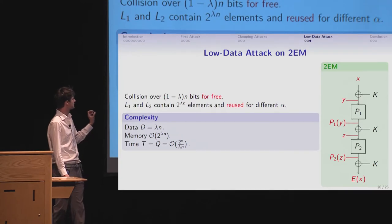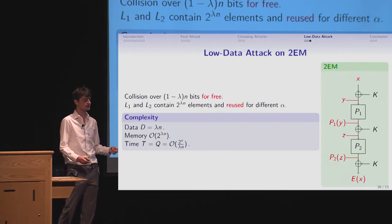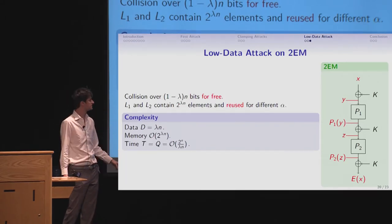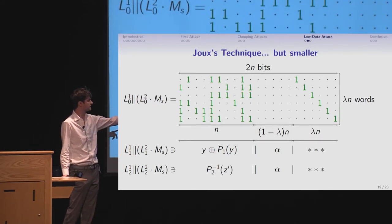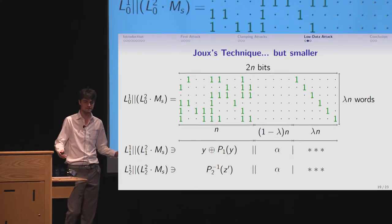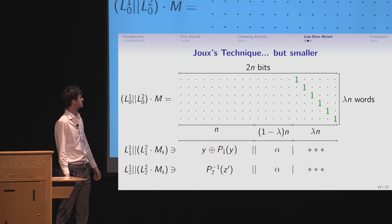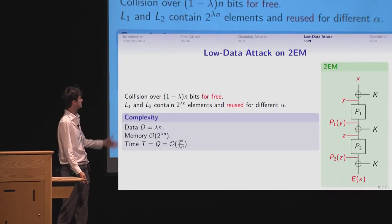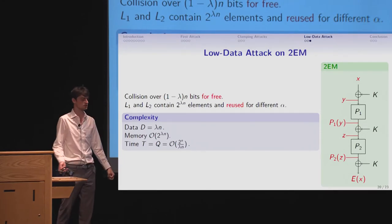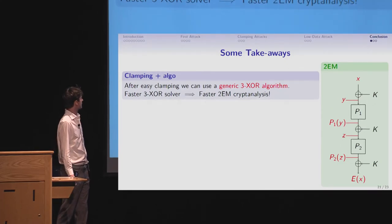And because you have this collision for free, and also you will have this time complexity, like 2 to the n over lambda n is very competitive, what we know. We have a very low data, like lambda n. And more importantly, the memory consumption, because they only contain 2 to the lambda n elements, like, remember, I query for all the values left on the right of the value alpha, so we have only lambda n bits of freedom. And when I choose another alpha, I can just throw away all the lists and query again. So the memory consumption really is only, again, imagine lambda being 1 over 2, it's 2 to the n over 2, which is much more reasonable than having a memory close to 2 to the n.